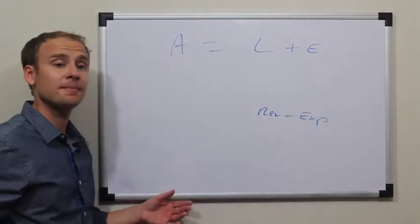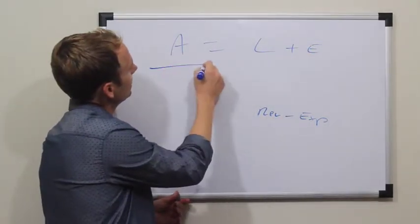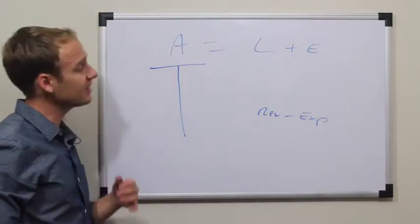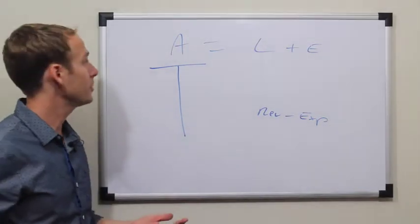Revenue minus expense equals profit or loss. So in accounting, two accounts are always affected. In this case, we're focusing on asset transactions. And this is a T-account to visually show how transactions are made.